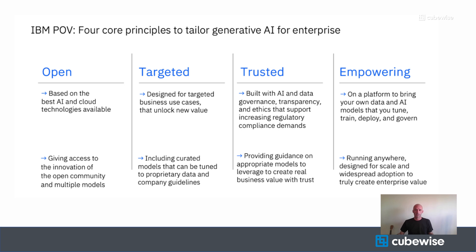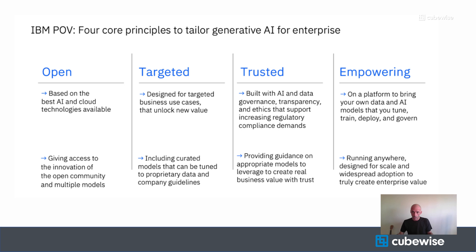The first principle is openness — open access. This means that you can use the best models from IBM and the open source community. You can bring in IBM's Granite models, Meta's Llama 2, or any models you can find on Hugging Face. This provides access to all of the cutting-edge models that are out there, brought into a governed space.